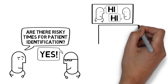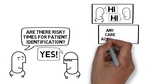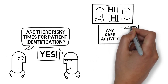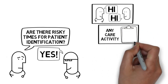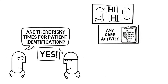The second risky time is whenever a patient is getting any care activity. This could include things such as tests, treatments, procedures, medications, blood products, and even food. Involving and empowering patients and families in this process can also safeguard the care we deliver.